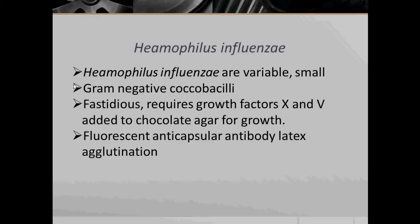Haemophilus influenzae are variable, small, Gram-negative Coccobacilli and are fastidious — fastidious meaning finicky and will only grow when particular or specific nutritional requirements are met. They require growth factors X and V added to chocolate agar for growth. Growth factors X and V are used for the differentiation of Haemophilus species. These are in the form of paper discs impregnated with X-Hemin and V-Nicotinamide Adenine Dinucleotide, also abbreviated as NAD. We also use latex agglutination to detect Haemophilus influenzae via fluorescent anticapsular antibodies.